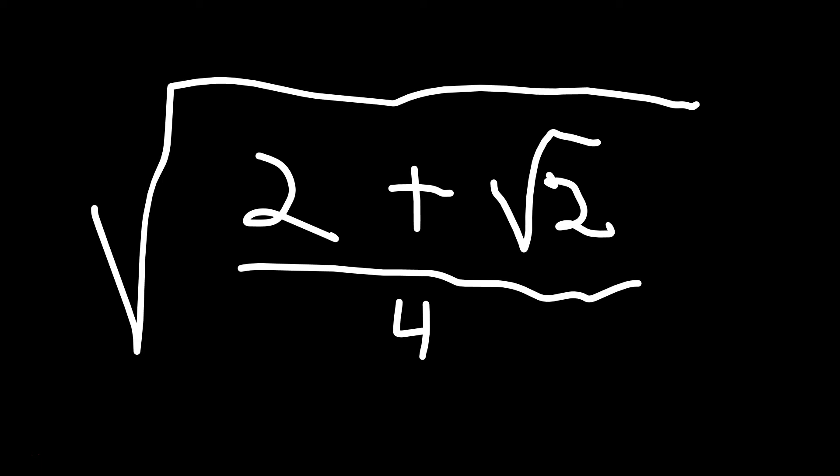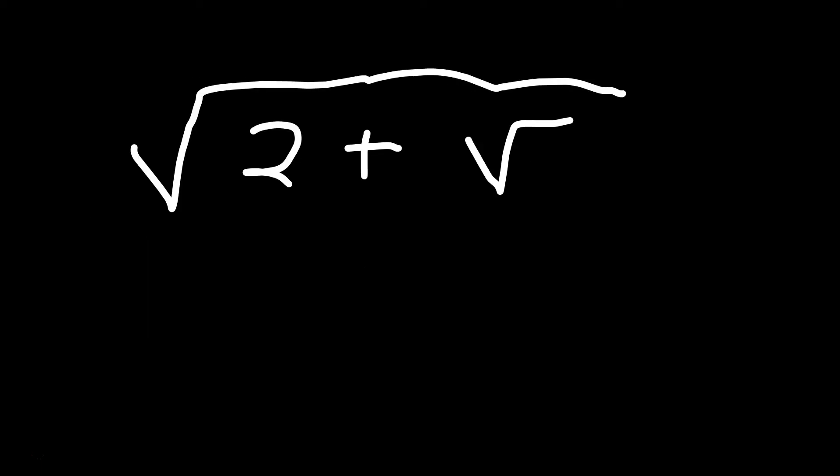But now we can distribute the root operation to the top and the bottom independently. So we will have the root of 2 plus the root of 2 over the root of 4. But we know the root of 4 is just 2. So we have the root of 2 plus the root of 2, and then 2 in the bottom.